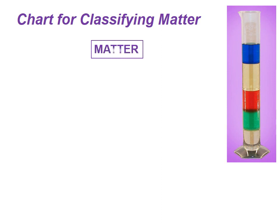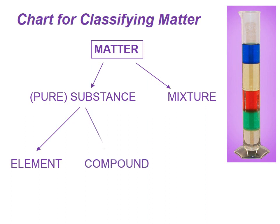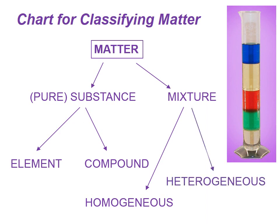To summarize with a classification graphic: a sample of matter is either a pure substance or a mixture of several substances. If it's a pure substance, it's either an element or a compound. If it's a mixture, then either those substances are evenly mixed — in which case we call it a homogeneous mixture — or they're not evenly mixed, which we call a heterogeneous mixture.